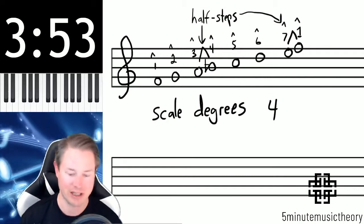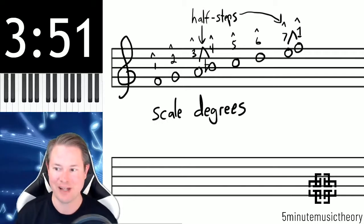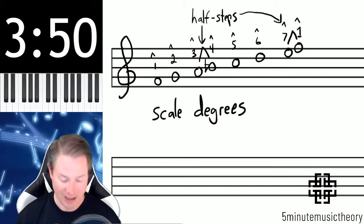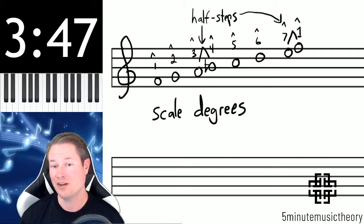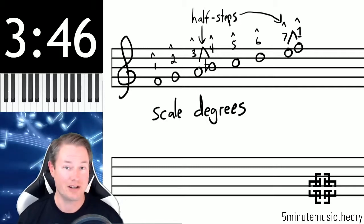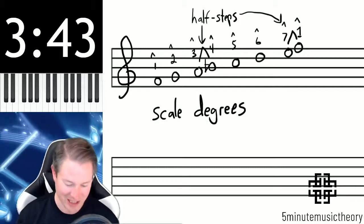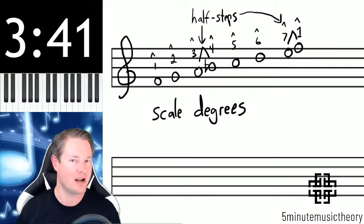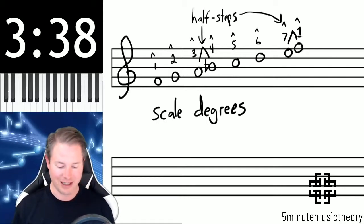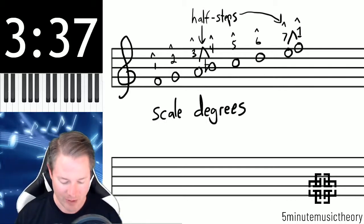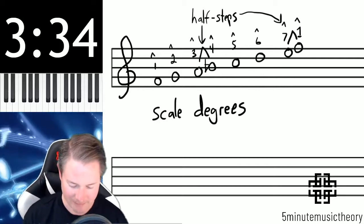So the fourth scale degree in F major is a B-flat. It's really important that we understand this term because I'm going to use scale degrees to refer to a lot of things, but it's just the member of a scale. The concept is really quite simple, and we indicate it with the little caret symbol.